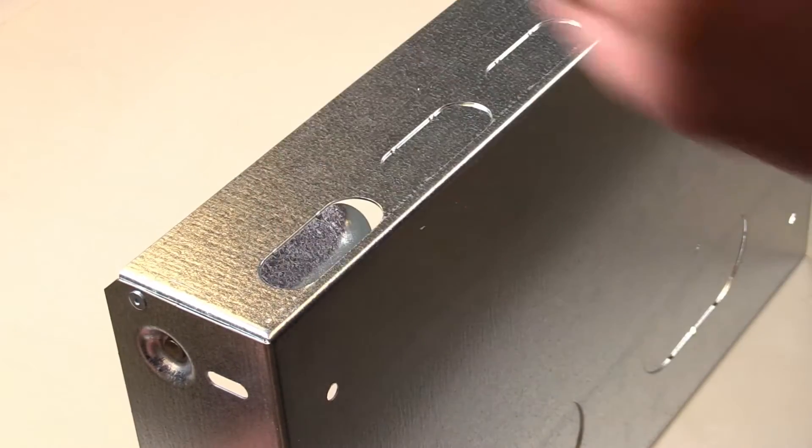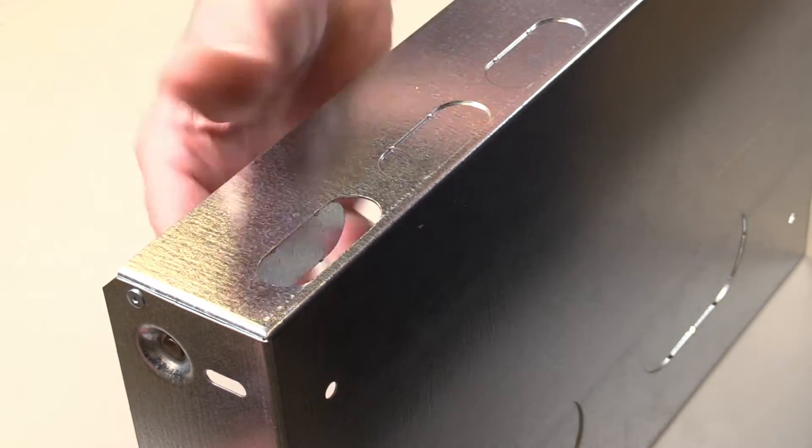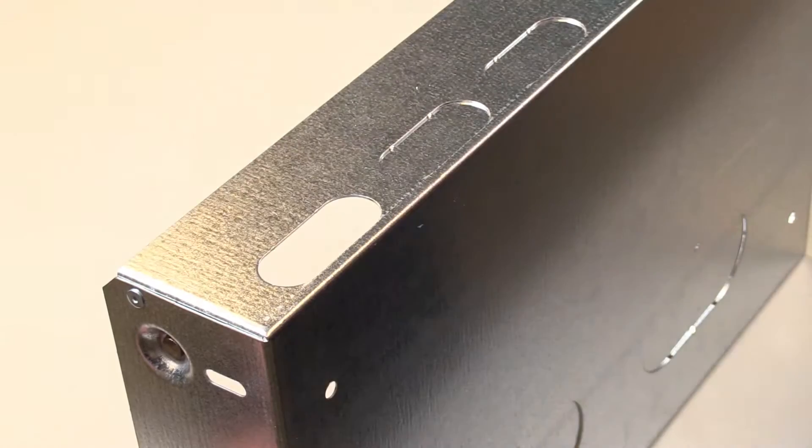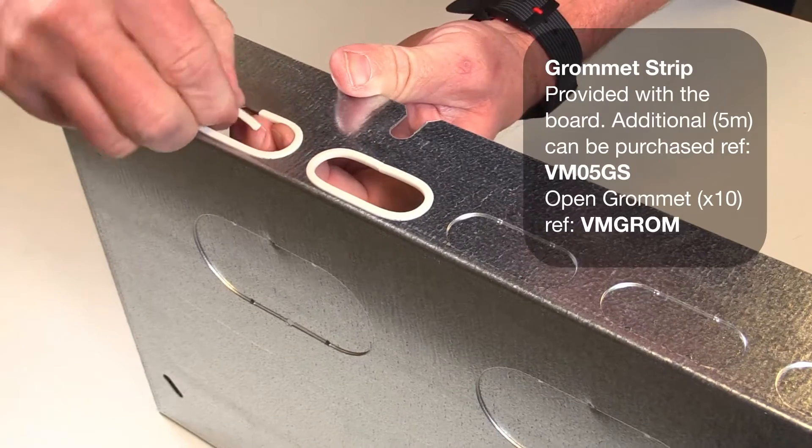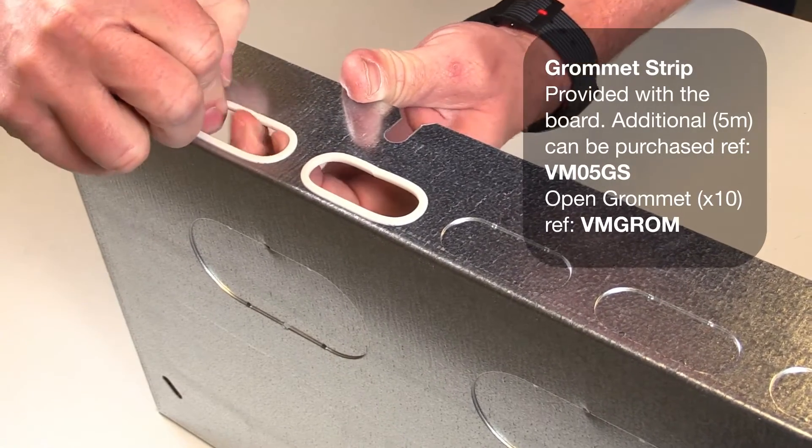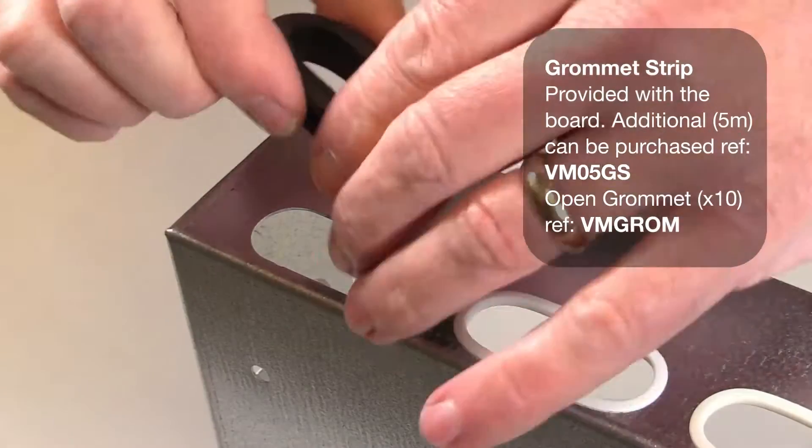There are knockouts on the top, bottom, sides, and rear of the enclosure. This facilitates cable entry for many different installations. The cable entries at the top and the bottom of the back box leave you a knockout which can be protected by either using the included grommet strip or a 38 millimeter open grommet.